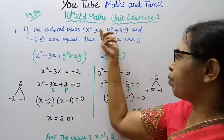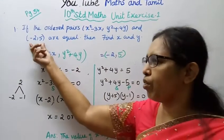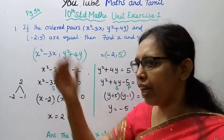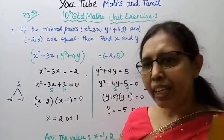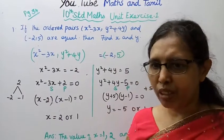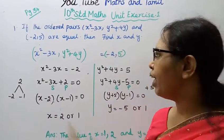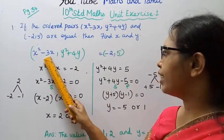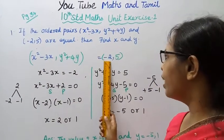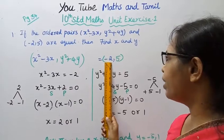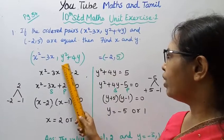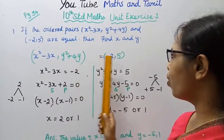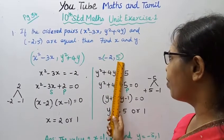Since the ordered pairs are equal, we equate corresponding components: x²-3x is equal to -2, and y²+4y is equal to 5.